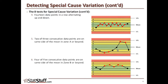The sixth test: four of five consecutive data points are on the same side of the mean in Zone B or beyond — within two standard deviations of the mean or beyond.